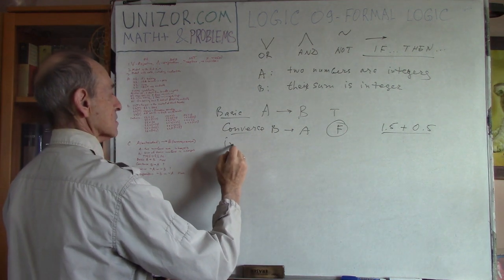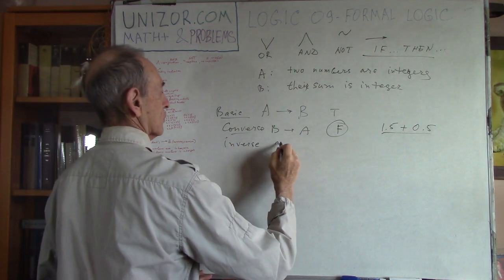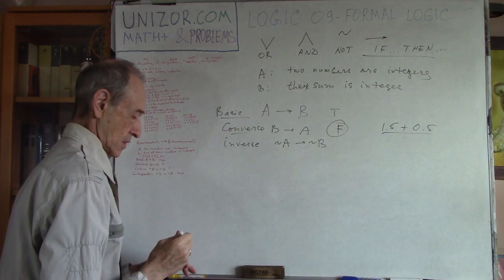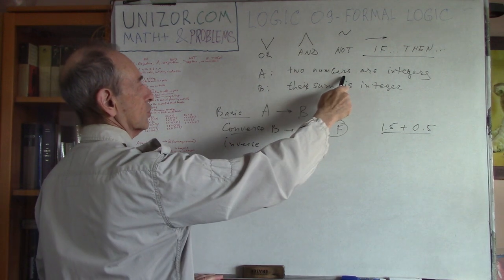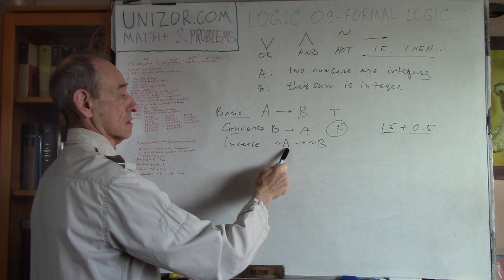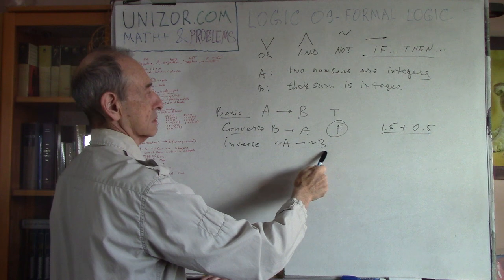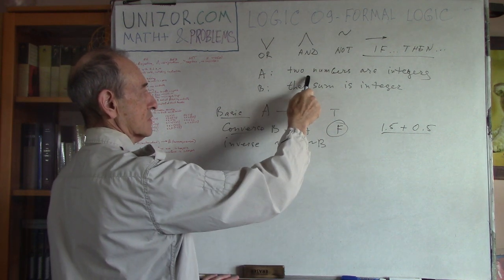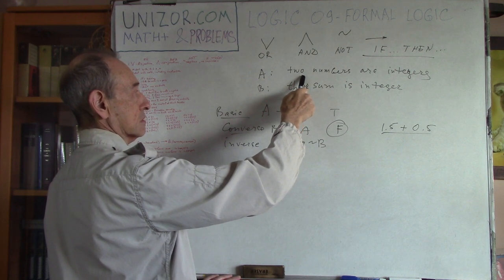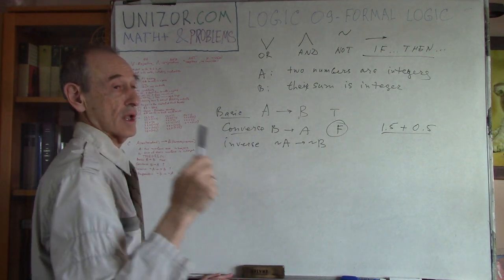There is also an inverse statement: from NOT A follows NOT B. Meaning: if two numbers are not both integers, then their sum is not an integer. This is also false — for example, you could have two non-integers whose sum is still an integer. The negation of A and negation of B: two numbers are not both integers, and their sum is not an integer — this is false.